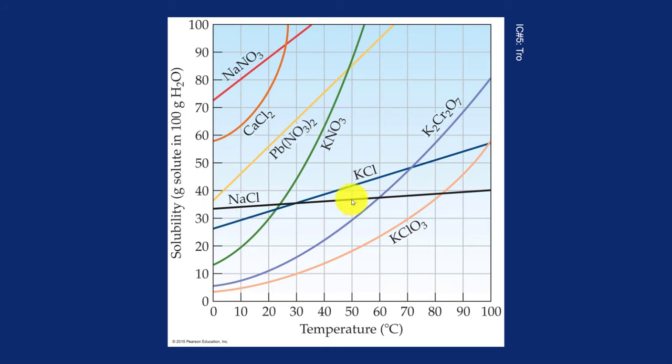So this black line right here, this is sodium chloride, that's table salt. You can see, as you warm up the water, you can just ever so slightly get more and more salt dissolved in the water. But other compounds, you can see a much more dramatic change.